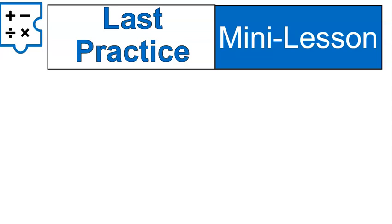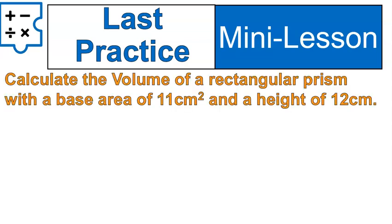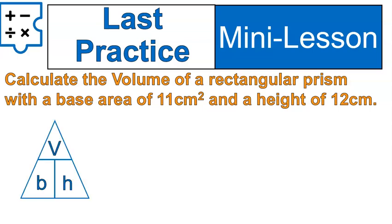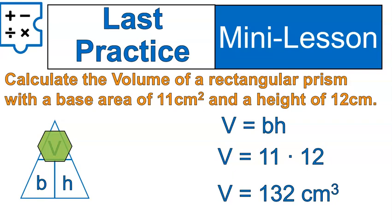Time for the last practice problem — pause and practice. Calculate the volume of a rectangular prism with a base area of 11 square centimeters and a height of 12 centimeters. If we use our pyramid, we cover over volume, leaving base times height on the bottom. The volume is equal to base times height, so 11 times 12 gives us 132 cubic centimeters, since it is a volume.